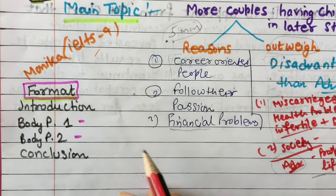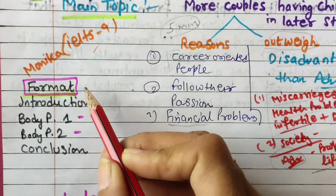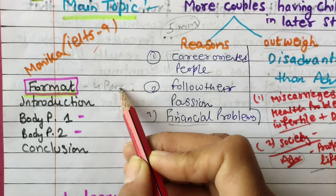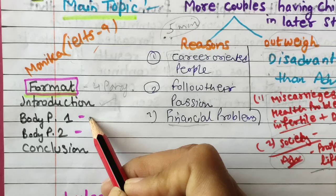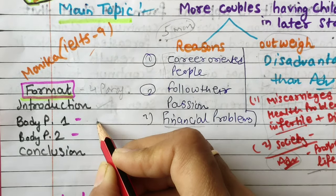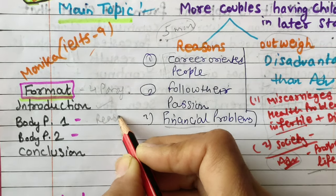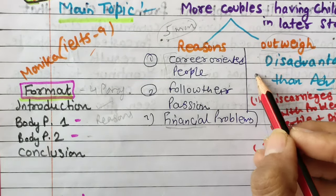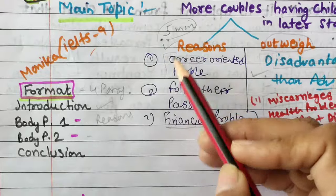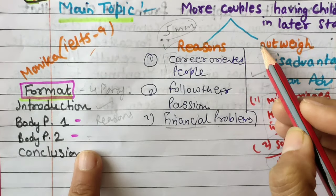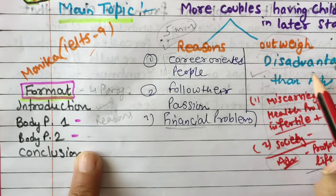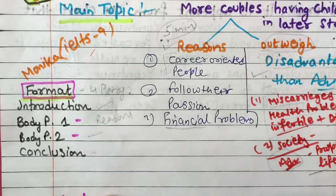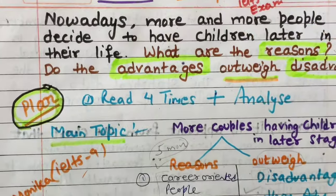Now let's look at the essay format. There are four paragraphs: the first is the introduction, the second body paragraph discusses reasons, the third body paragraph covers advantages and disadvantages with your outweigh opinion, and the fourth is the conclusion.